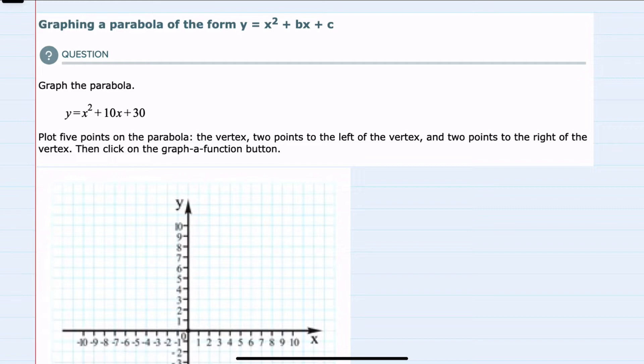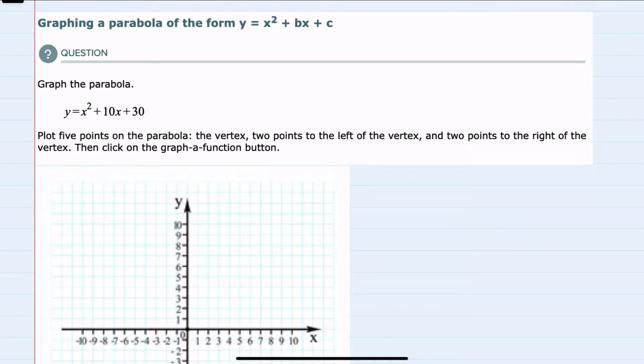We're asked to graph the parabola y equals x squared plus 10x plus 30, and the method we're asked to use is to find 5 points on the parabola: the vertex, 2 points to the left, 2 points to the right, so 5 points in total.